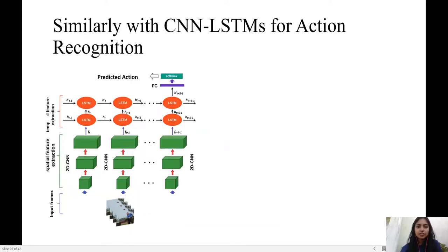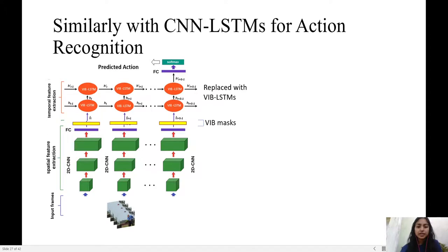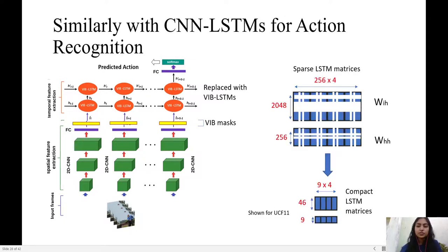For CNN LSTM architectures, the feature vector extracted needs to be passed through VIB masks and the LSTMs are to be replaced with VIB LSTMs. The whole architecture needs to be trained with the VIB loss function, which leads to sparse LSTM matrices which can be compacted to give smaller models.